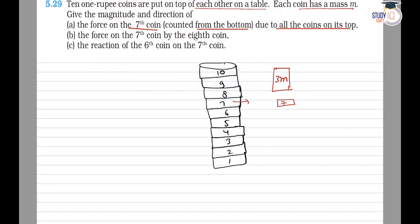By making the free body diagram, we can say that the force exerted by the seventh coin on the upper coins is normal, and the upper coins will also exert a force of normal on the seventh coin. Making the FBD of the upper part — that is, the three coins 8, 9, and 10 — the mass of the system is 3m, so the downward force is 3mg and the upward force is normal. Since the system is at rest, normal is equal to 3mg.